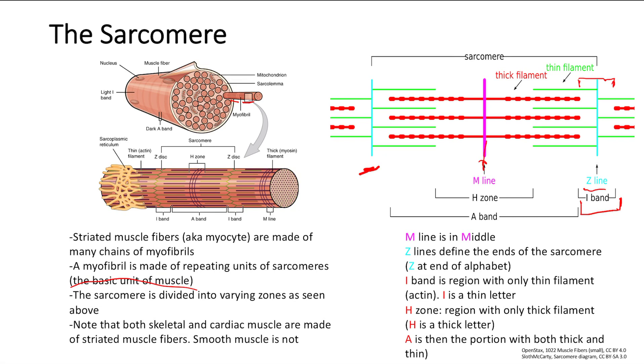Then we look at the H zone. H zone is here. H zone is the region covering only the thick filaments. So remember what that was? That was myosin. H is thick, so H is the region with only the thick filament.